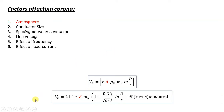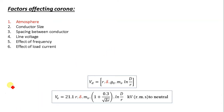In this lecture we are going to discuss the different factors which affect corona, or we can say corona loss. The phenomenon of corona is affected by the physical state of the atmosphere as well as by the condition of the transmission line. We have defined some of the factors upon which corona is going to depend.